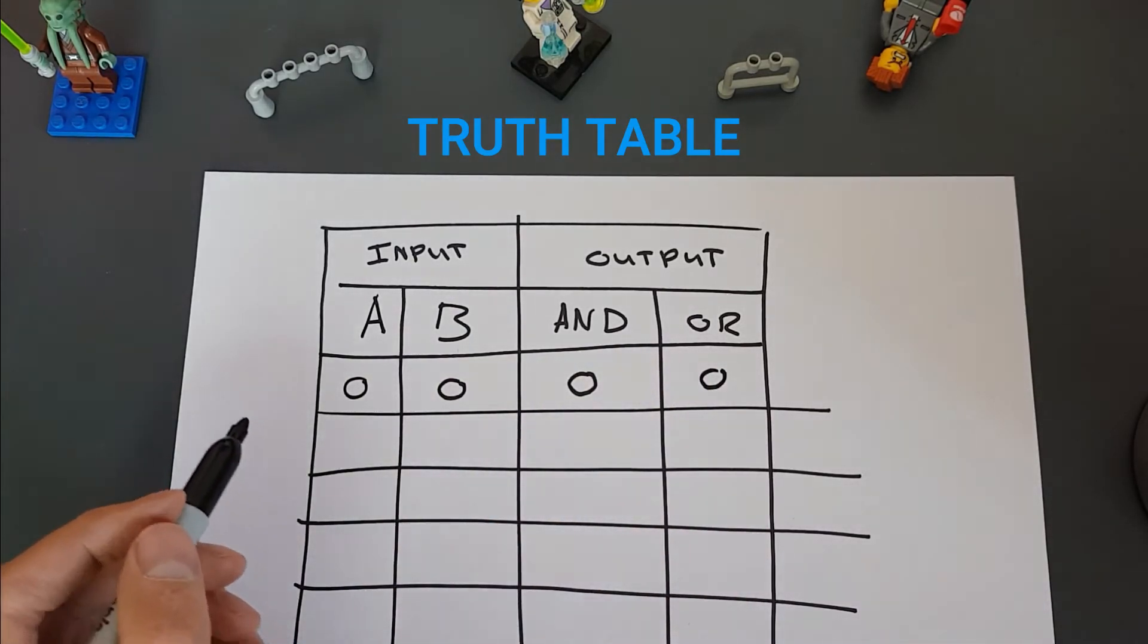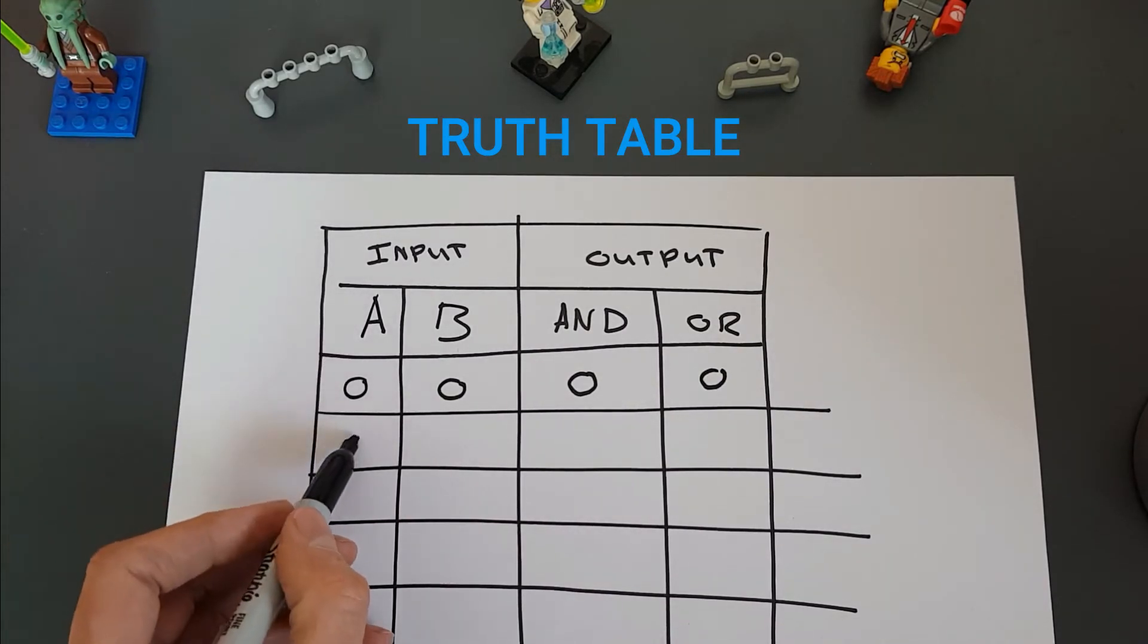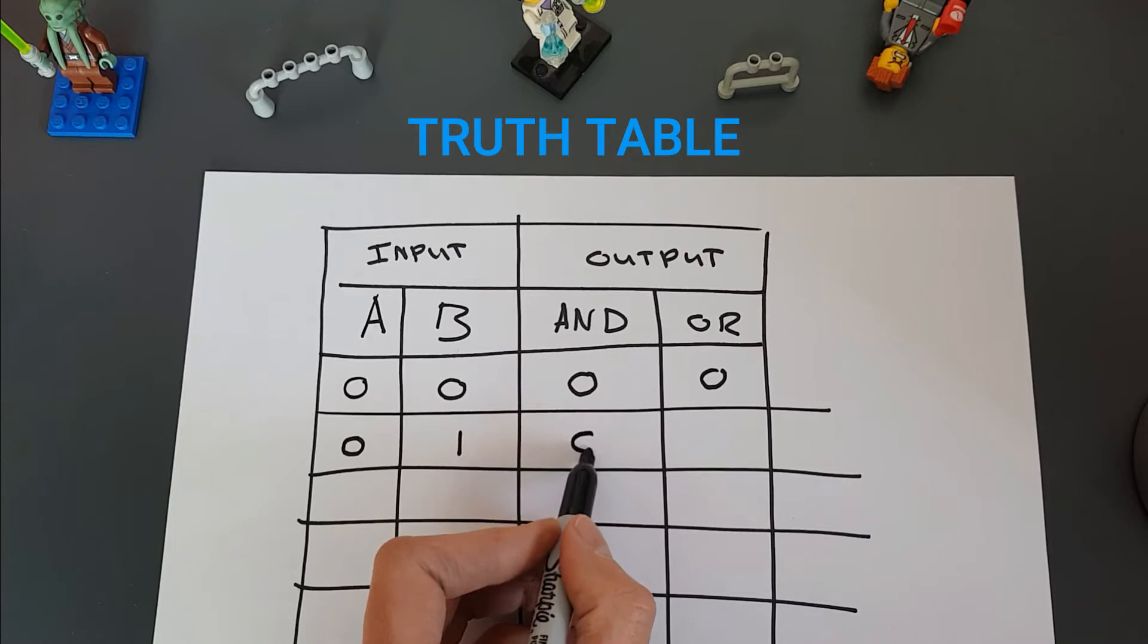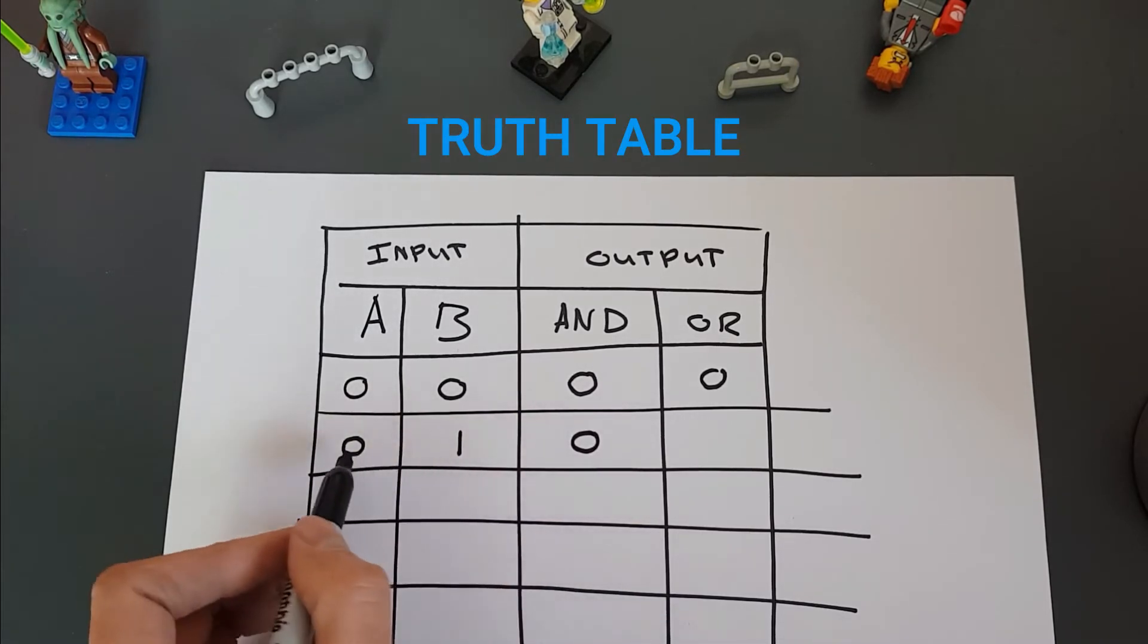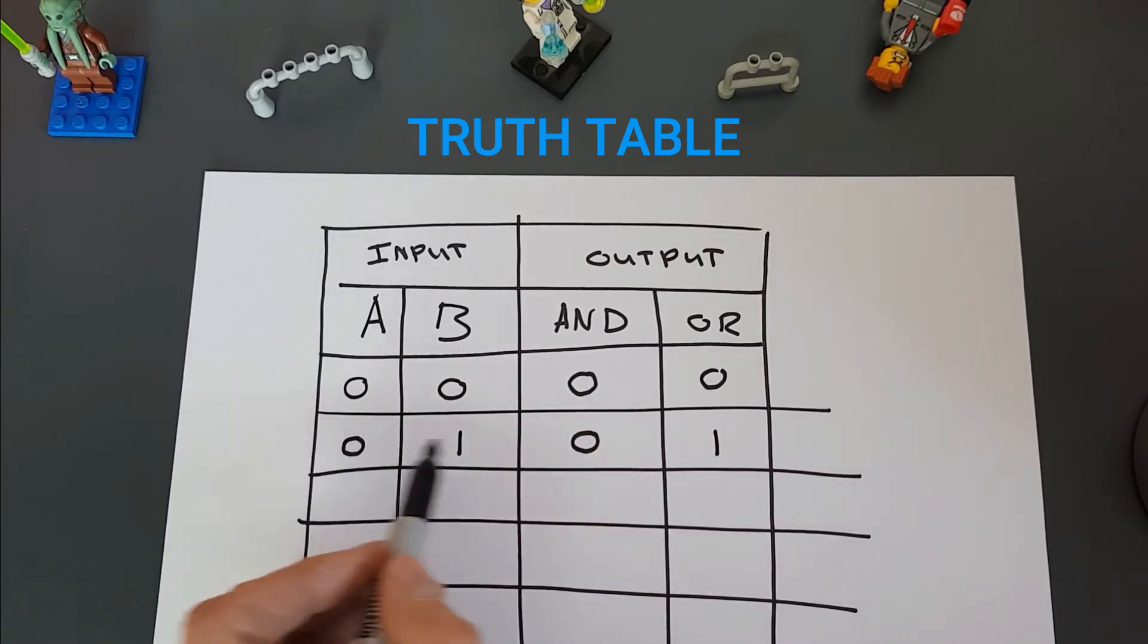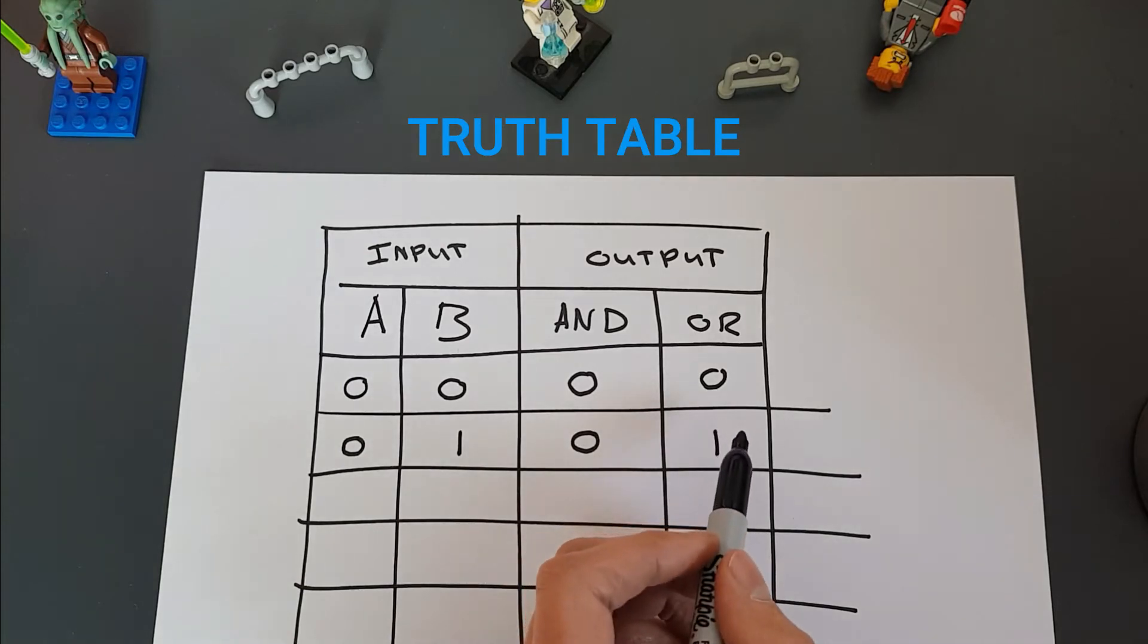Right, let's try the next one. So if A is OFF or 0 or FALSE and B is TRUE, AND is still going to be FALSE because it needs both of those to be TRUE. But OR will output TRUE because it's saying either of these can be TRUE for me to output TRUE.